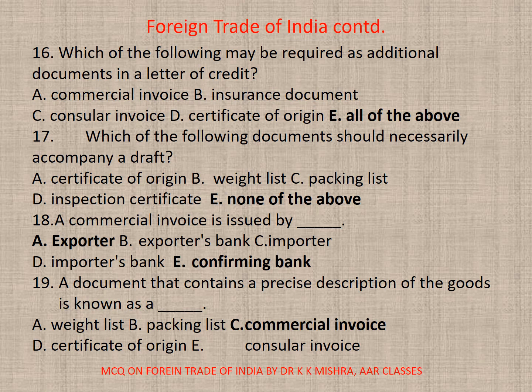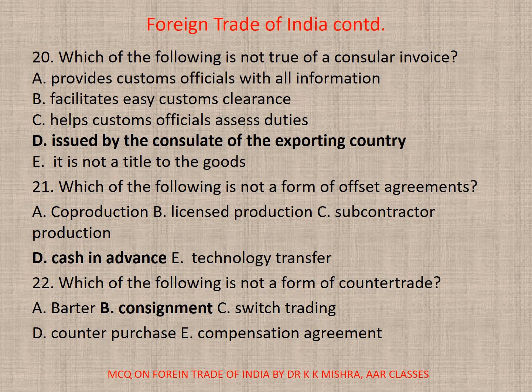Question 18: A commercial invoice is issued by dash. The correct option is A — Exporter. Question 19: A document that contains a precise description of the goods is known as dash. The correct option is C — Commercial invoice. Question 20: Which of the following is not true of a consular invoice? The correct option is D — issued by the consulate of the exporting country.